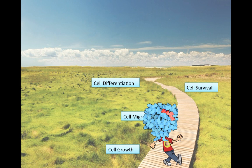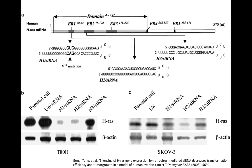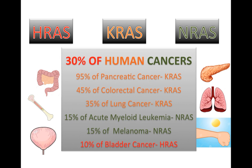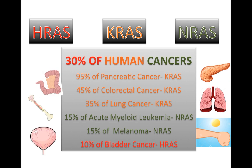Given the role of RAS proteins, they are encoded by a proto-oncogene, or a gene that can cause cancer when altered by mutation. The three RAS genes found in humans — HRAS, KRAS, and NRAS — are the most common genetic contributors to human cancer and are found in 30% of human tumors, including 95% of pancreatic cancers and 45% of colorectal cancers.